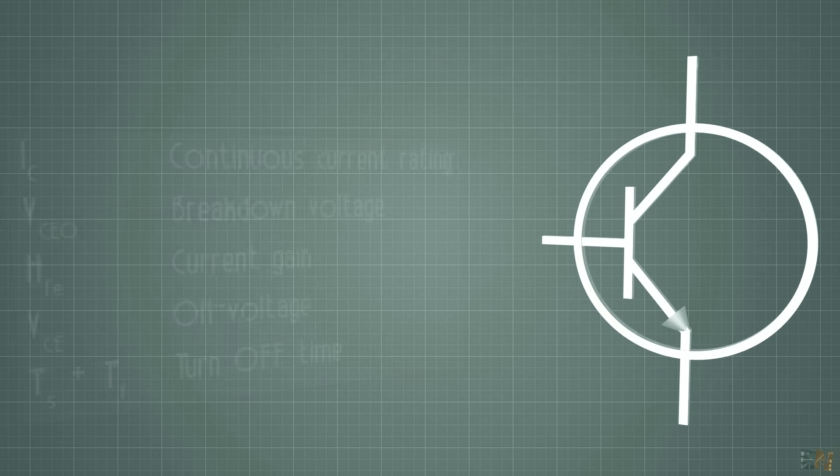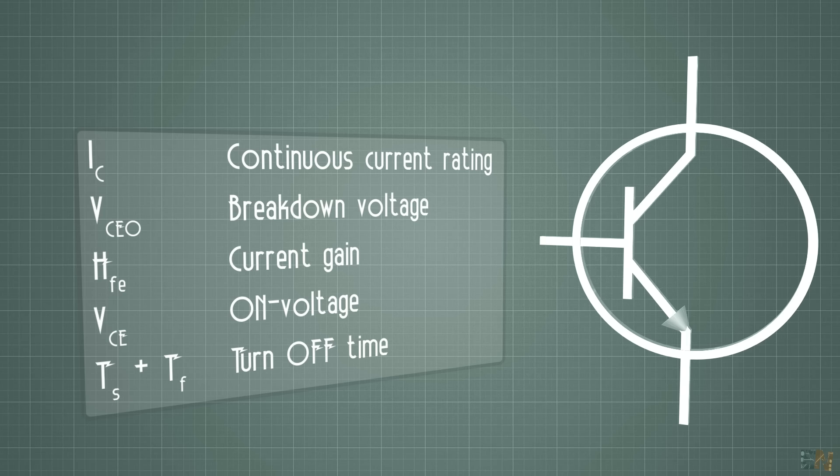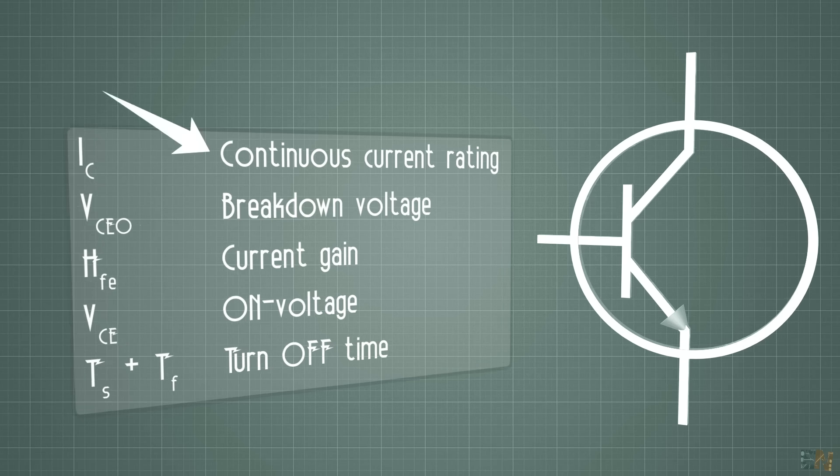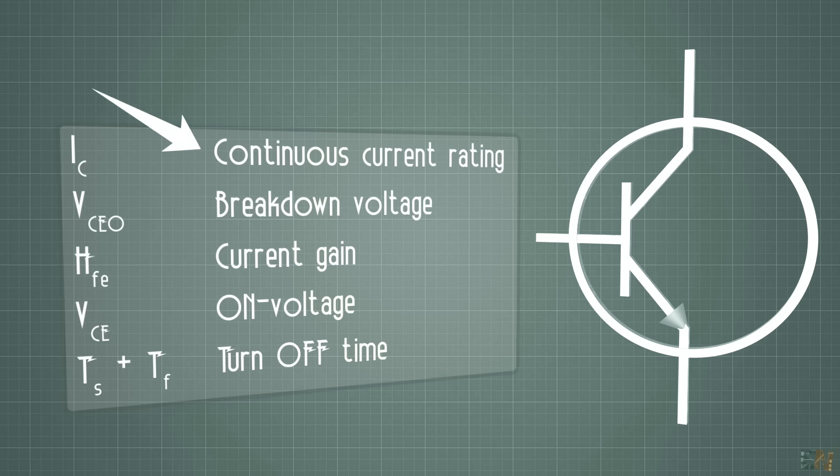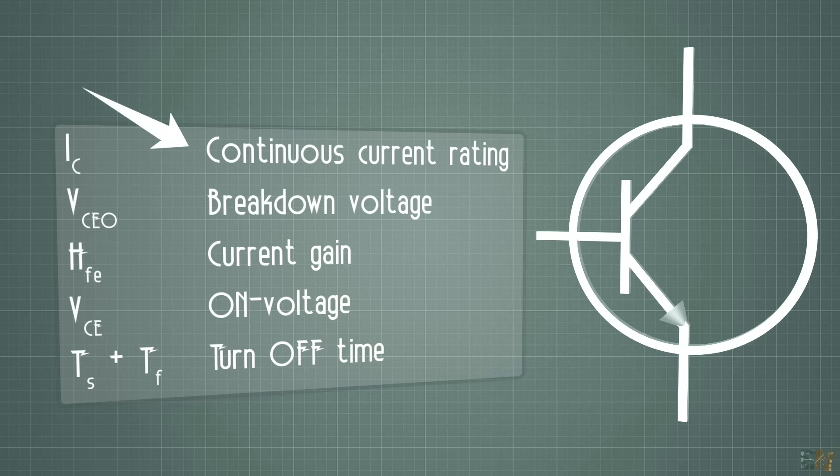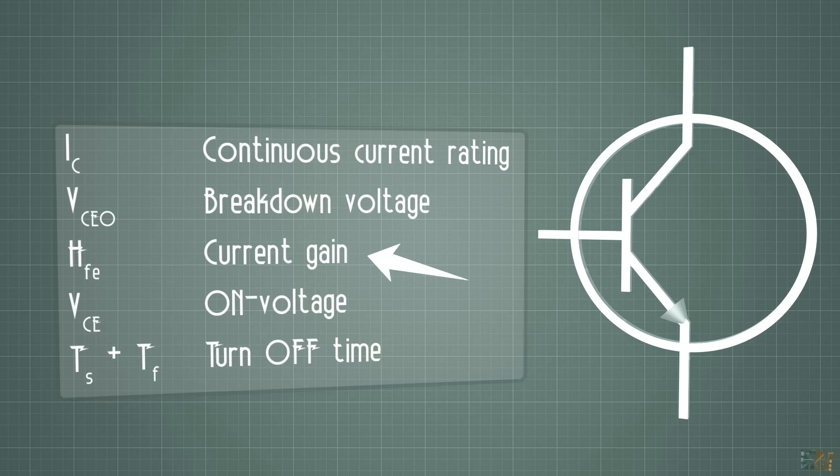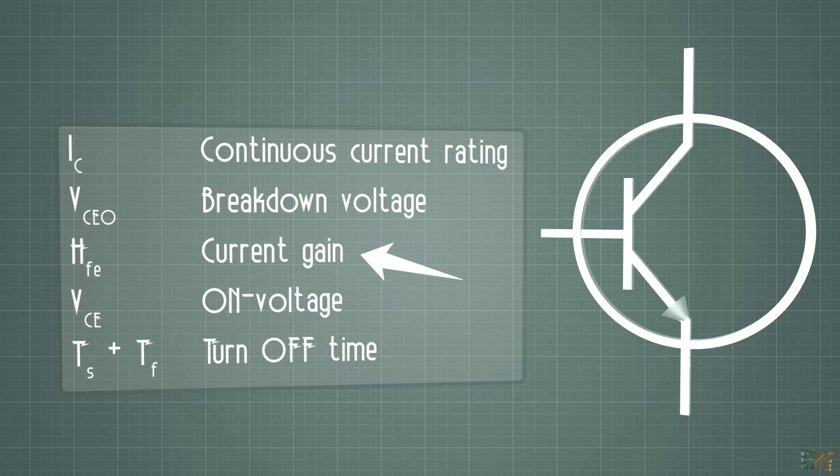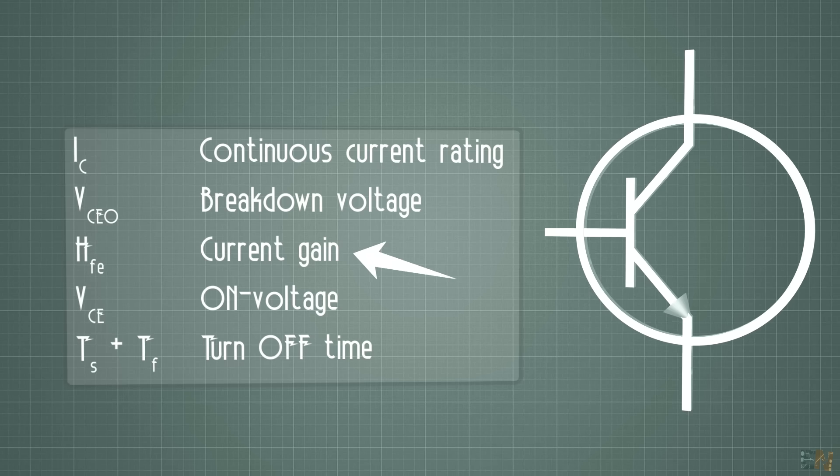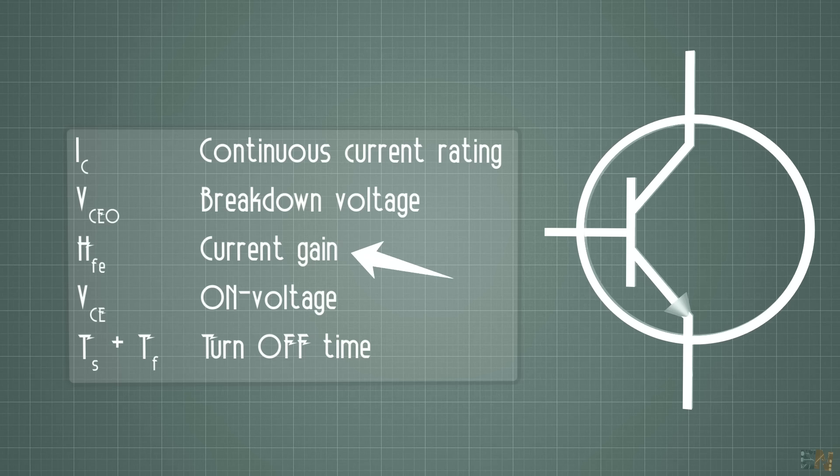Other parameters you need to have in mind when searching for components and checking datasheets. For the BJT, we first have the IC, which will show the value of continuous current rating. We also have the HFE, which is the current gain, the relation between the current and the collector and the emitter.